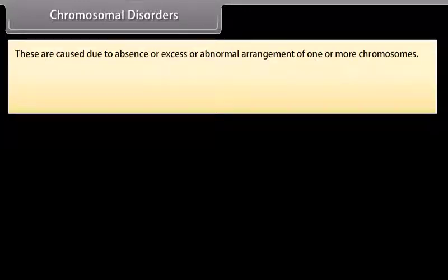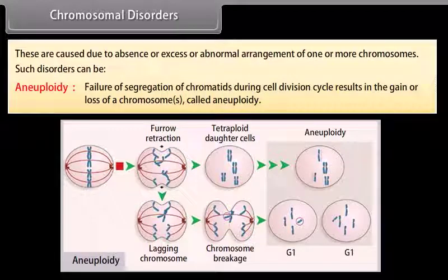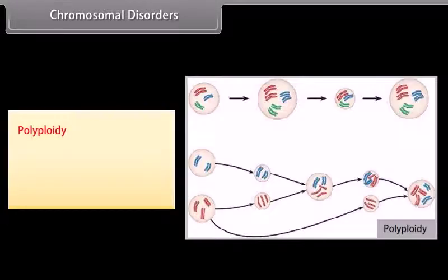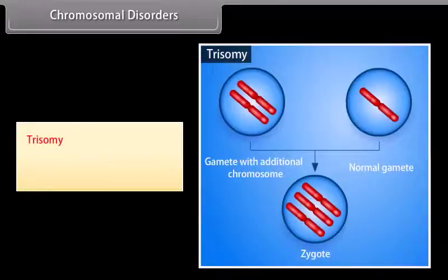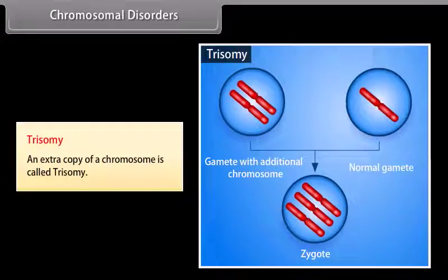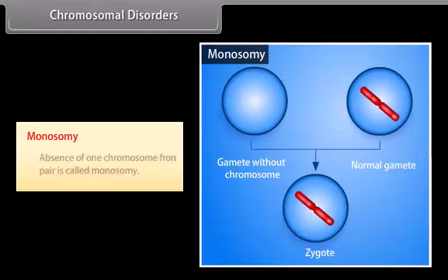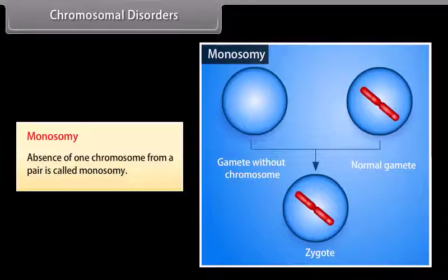Chromosomal disorders are caused due to absence, excess, or abnormal arrangement of one or more chromosomes. Aneuploidy refers to the failure of segregation of chromatids during cell division, resulting in the gain or loss of chromosomes. Polyploidy is a condition that arises when cytokinesis does not occur after telophase, resulting in an increase in a whole set of chromosomes. Trisomy refers to an extra copy of a chromosome, while monosomy refers to the absence of one chromosome from a pair.